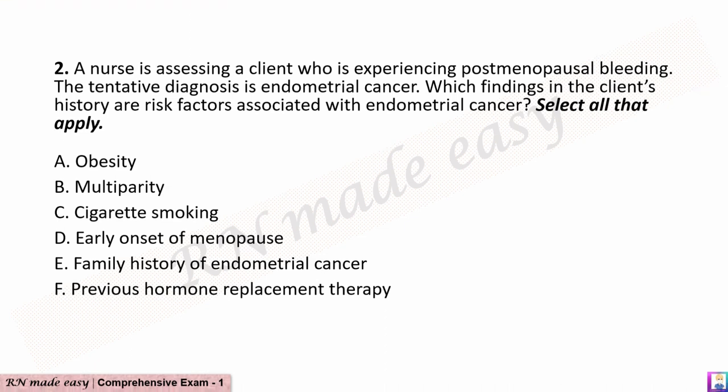Question 2. A nurse is assessing a client who is experiencing post-menopausal bleeding. The tentative diagnosis is endometrial cancer. Which findings in the client's history are risk factors associated with endometrial cancer? Select all that apply. A. Obesity. B. Multi-parity. C. Cigarette smoking. D. Early onset of menopause. E. Family history of endometrial cancer. F. Previous hormone replacement therapy.